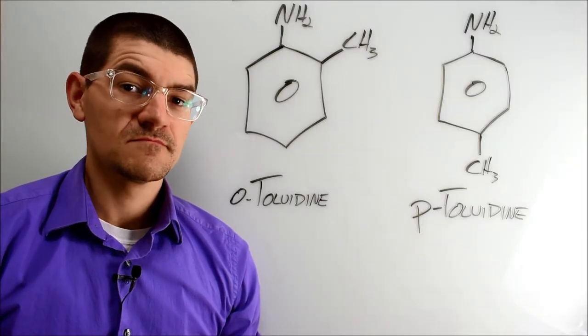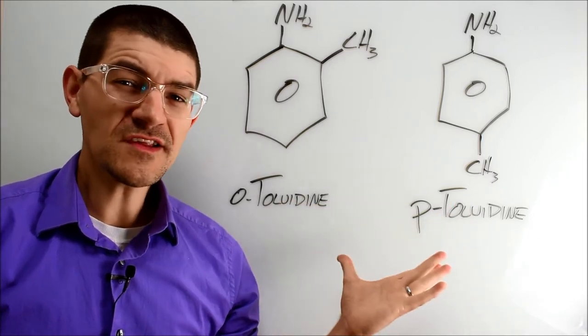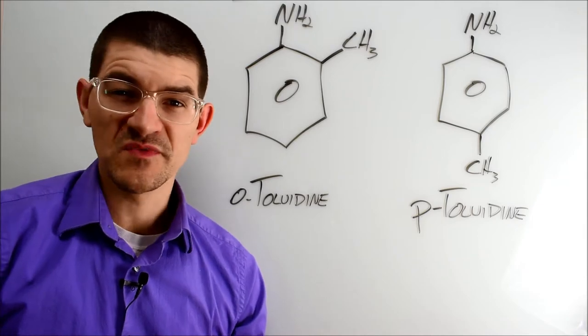The key to Perkin's mauveine is toluidine, specifically ortho-toluidine and para-toluidine. Without these two isomers, you don't get the main couple species in mauveine.